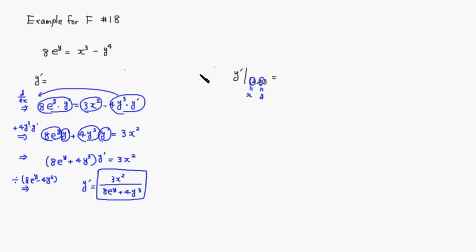So let's do that. So it's going to be 2 here, so it's 3 times 2 squared, divided by 8 times e to the 0, plus 4 times 0 cubed.